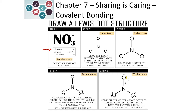Nitrogen sits in column 5, or 15, and so it has 5 valence electrons. We have 3 oxygens included in this NO3 example. The oxygens each have 6 valence electrons, and because there are 3 of them, we multiply by 3. We also have a negative charge, which means there is an additional electron included in the structure, so we add 1. For nitrate — nitrogen with 3 oxygens and a negative charge — we have a total of 24 electrons to use.